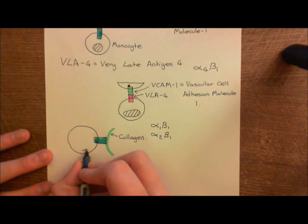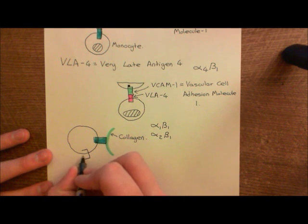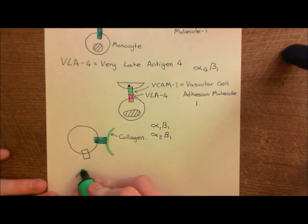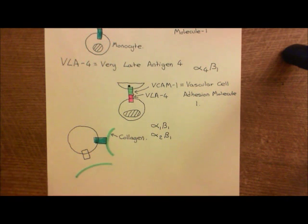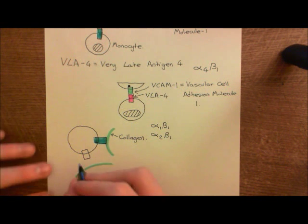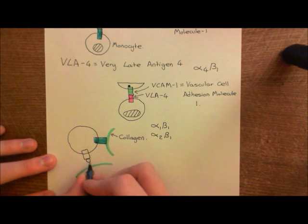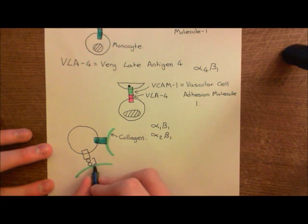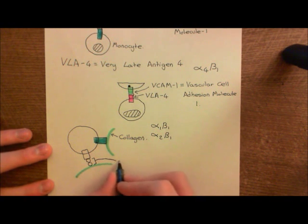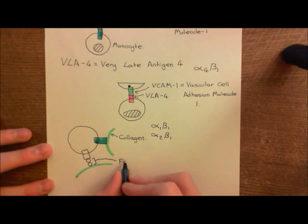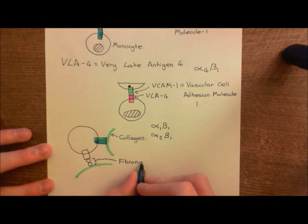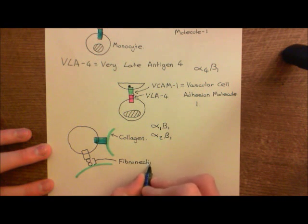Alternatively, there are other integrins which don't bind directly to collagen. Instead, they're going to have a little protein dimer in between them. And this protein dimer is known as fibronectin. Here is our fibronectin protein dimer here, and fibronectin is the word used to describe the dimer of two fibronectin proteins.